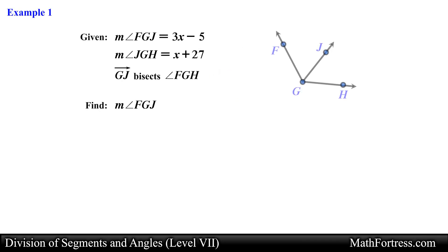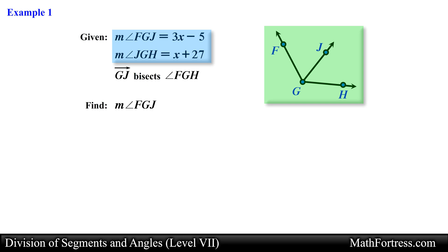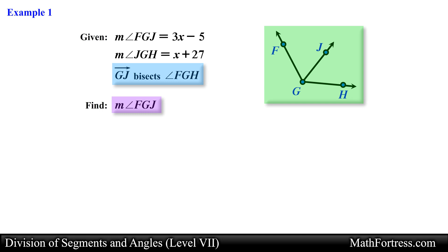Let's take a look at the first example. Given that the measurement of angle FGJ is equal to 3x minus 5, the measurement of angle JGH is equal to x plus 27, and ray GJ bisects angle FGH, find the measurement of angle FGJ. In this problem we are provided with a diagram along with algebraic expressions representing the measurement of two angles. We are also given that a ray bisects an angle, and we are asked to find the measurement of a particular angle.